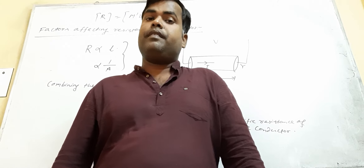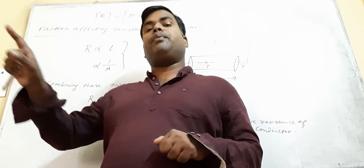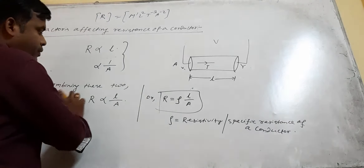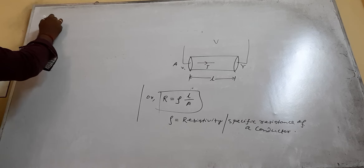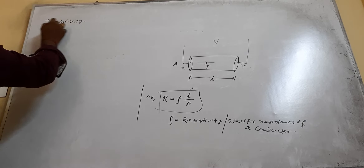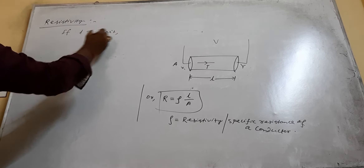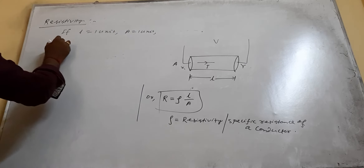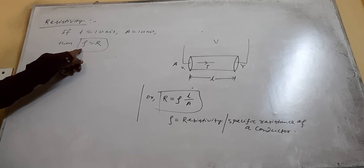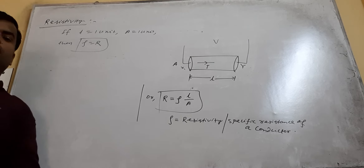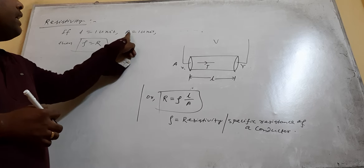Resistivity of iron is different from resistivity of copper. Now, to define resistivity: if you take L equal to 1 unit and A equal to 1 unit, then ρ equals R. That means the specific resistance of a conductor is numerically equal to its resistance when it has unit length and unit area of cross section.